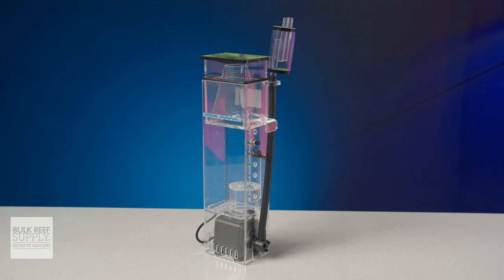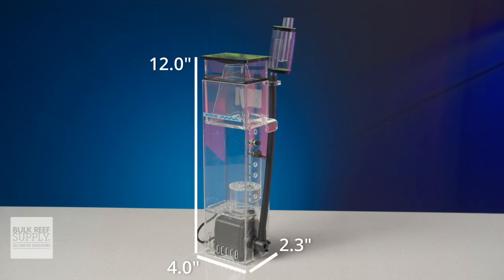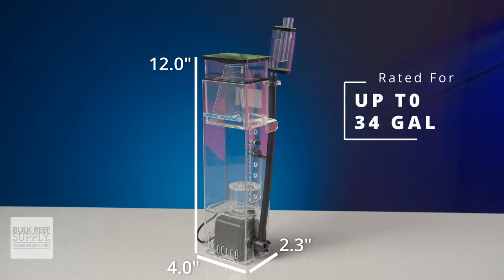The BioSkim DC is quite tiny at just four inches by 2.3 inches and around 12 inches tall. And it's rated for aquariums up to 34 gallons.